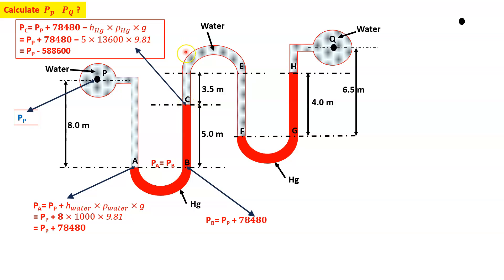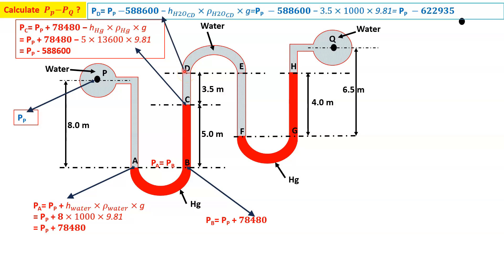Next, calculating pressure at D: PD = PP − 588600 − H_water(CD) × ρ_water × g. Here H_water is 3.5 m and ρ_water is 1000, so PD = PP − 622935. Drawing a horizontal line, PD = PE, so PE = PP − 622935.